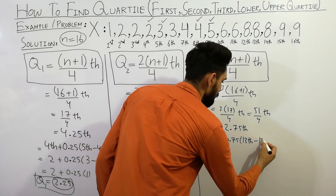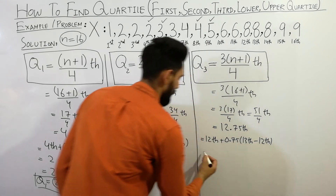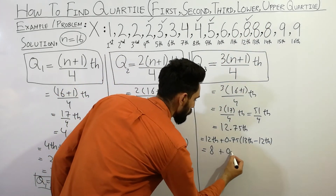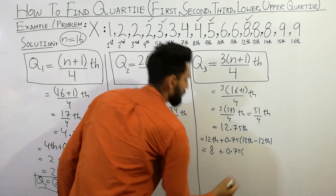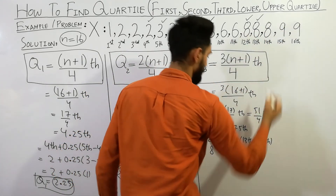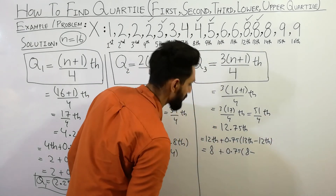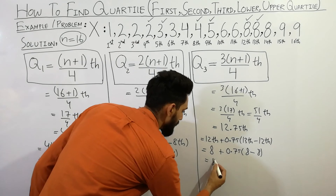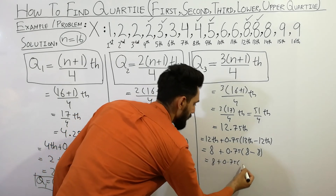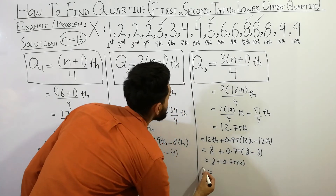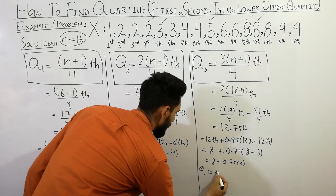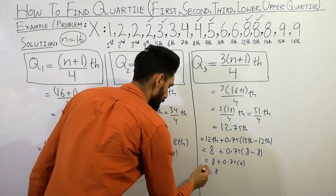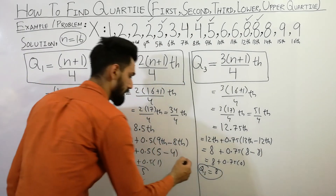You can write: 12th term plus 0.75 bracket (13th term minus 12th term). The 12th term is given here as 8, and the 13th term is also 8, so 8 minus 8 equals 0. Therefore Q3 = 8. I hope you are clear on the concept of how to find the quartiles Q1, Q2, and Q3.